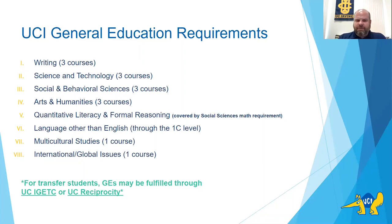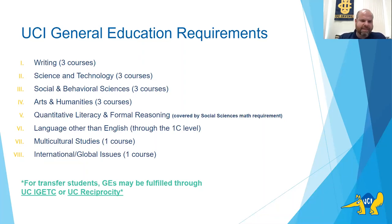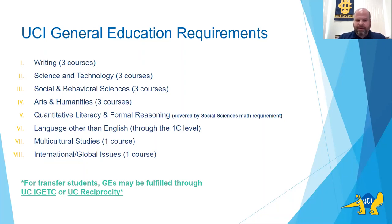Category five is quantitative literacy and formal reasoning, which in the School of Social Sciences will be covered by the math requirement we'll talk about later. Category six is language other than English — at UCI, we require students to go through the 1C level. Category seven is multicultural studies — one course, such as race and ethnic studies, Asian-American studies, or African-American studies. And category eight is international/global issues — one course typically focusing on a topic outside the U.S., like history of China or Canadian politics.